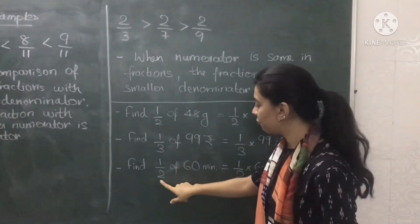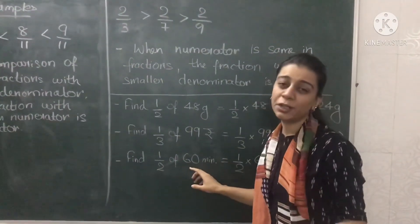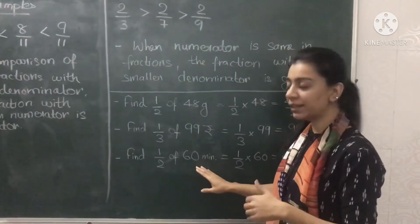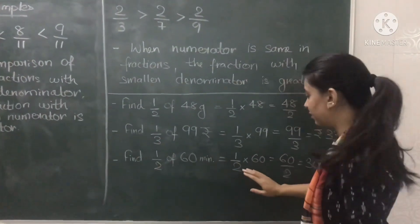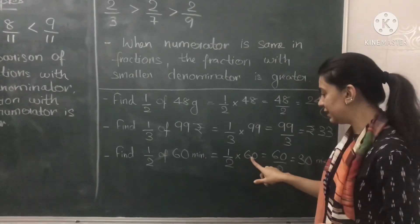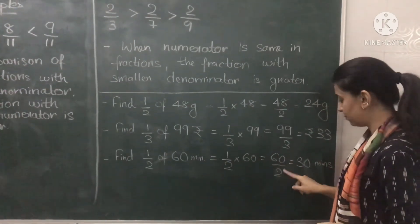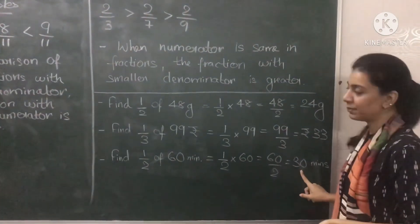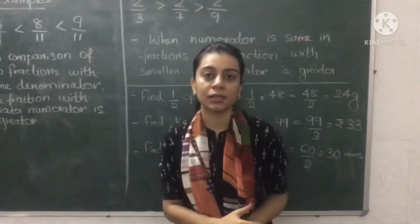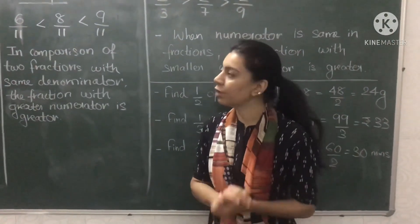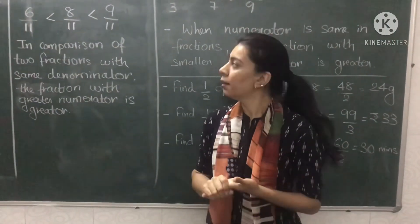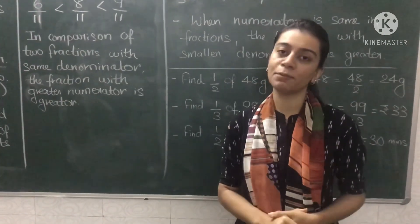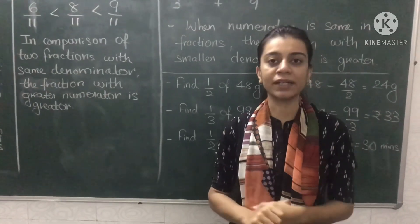Now, find half of 60 minutes. You already know half of 60 minutes is 30 minutes. The method is: 1 by 2 of 60 is 60 divided by 2, which gives 30 minutes. In this way, a fraction represents one or more equal parts of a whole object and is written in the form of numerator and denominator.